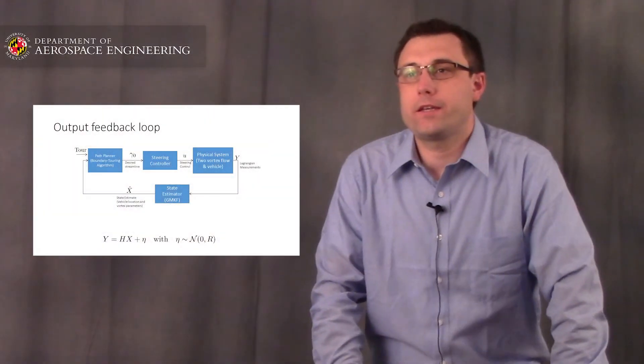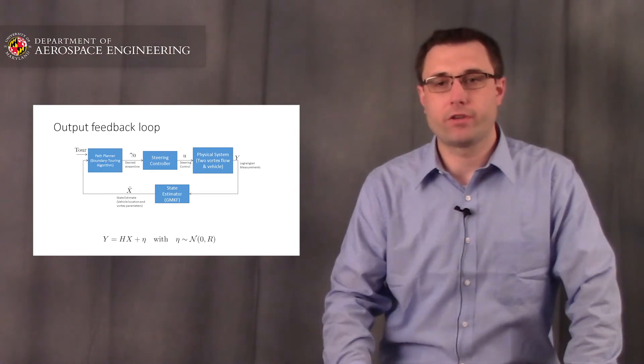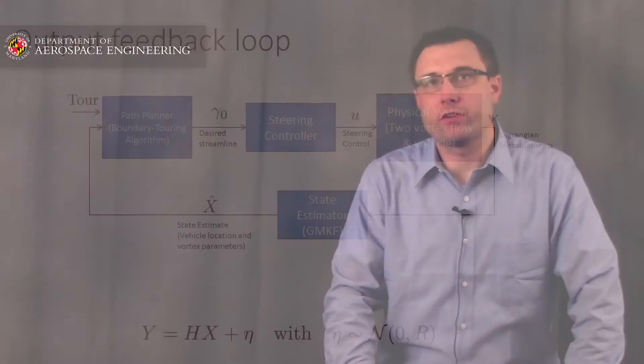The framework works by taking Lagrangian measurements of the vehicles. Those are measurements of the vehicle positions as they drift and are influenced by the presence of the underlying flow. And it uses these measurements to estimate the underlying parameters of the flow model and build a flow map by which the vehicles decide where they want to go.